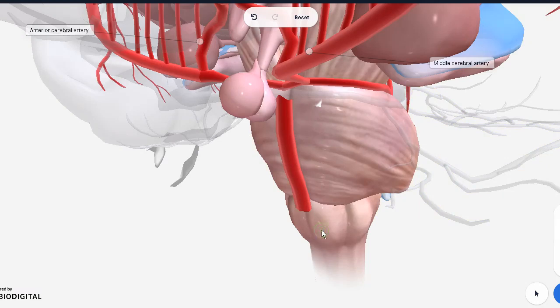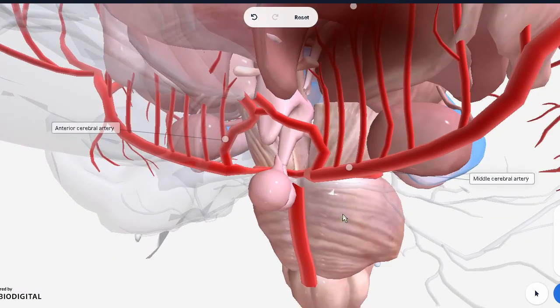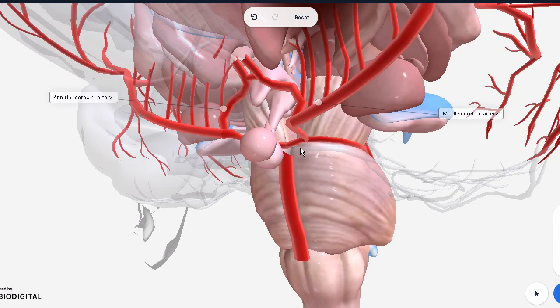If you remember, down below we had the medulla oblongata, which had two vertebral arteries, not visible here. Vertebral arteries combine to form your basilar artery. And then from the basilar artery, we have the posterior cerebral artery. They have made this transparent just to make other things clear. But if you can just see over here, you can see the posterior cerebral artery.